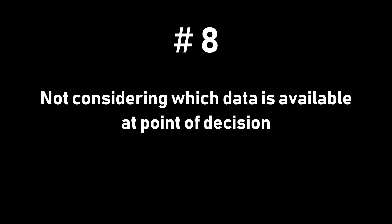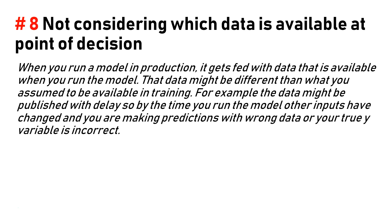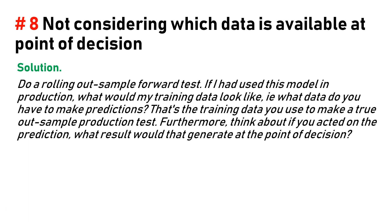Number eight: not considering which data is available at the point of decision. When you run a model in production, the data that is fetched may be different from what you assumed to be available during training. For example, data might be published with a delay, so by the time you run the model your inputs have changed, and you are making predictions with wrong data, or your true target variable is incorrect.